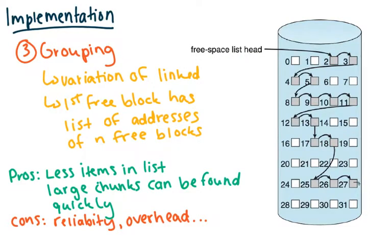Another way that you can implement this is by grouping. It's a variation of linking things. However, now in this case, this first free block will have a list. So this first free block will now have a list of N other free blocks. So it'll have a list of three, four, five, eight, nine, so on and so forth, whatever N you decide.